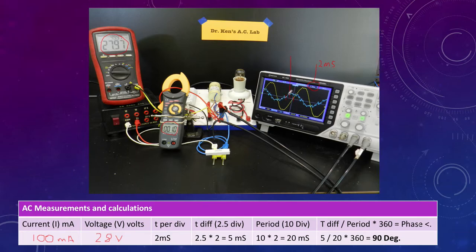So that time difference is 2.5 divisions. Which means if I've got 2.5 divisions at 2 milliseconds per division, I've got 5 milliseconds different.